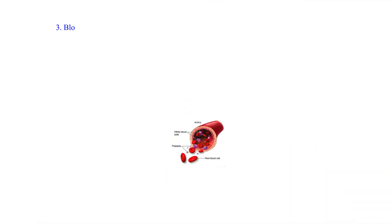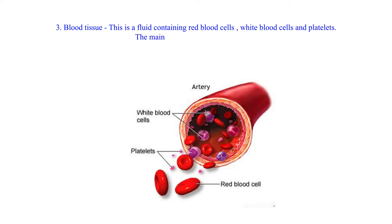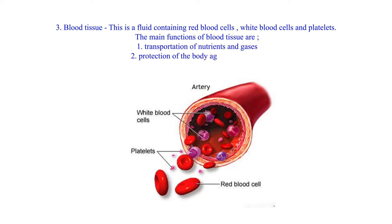3. Blood Tissue: This is a fluid containing red blood cells, white blood cells and platelets. The main functions of blood tissue are: 1. Transportation of nutrients and gases. 2. Protection of the body against infection.